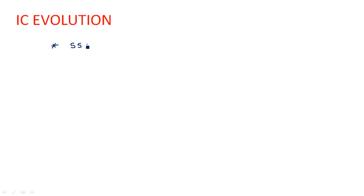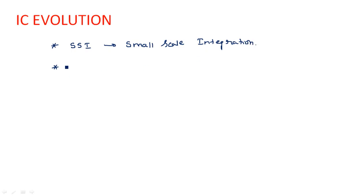Now coming to IC evolution — what do you mean by IC evolution? IC evolution refers to the several stages of integrated circuits. The first stage is Small Scale Integration, or SSI. The second one is Medium Scale Integration, or MSI.